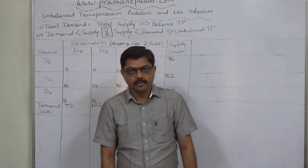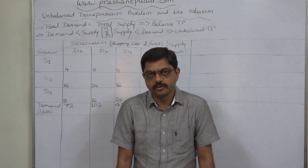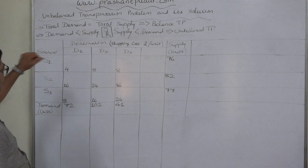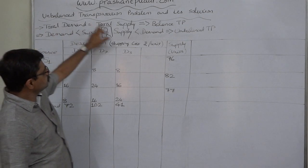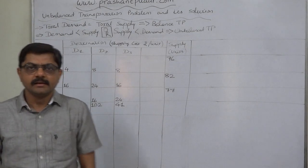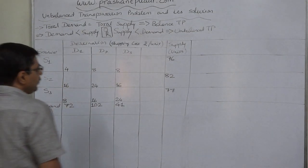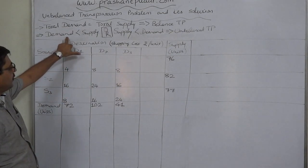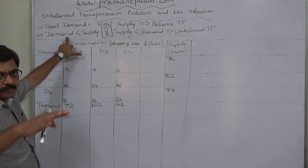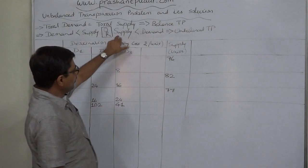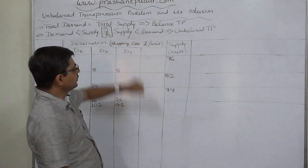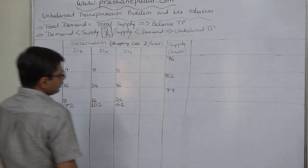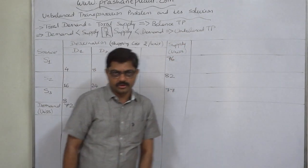To solve a transportation problem, it is necessary to have it as a balanced problem. A balanced transportation problem is one where total demand equals total supply. But if demand is less than supply, or supply is less than demand — that is, total demand and total supply are not equal — then the problem is an unbalanced transportation problem.